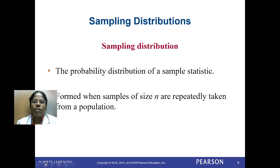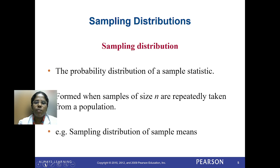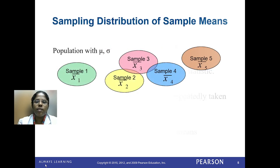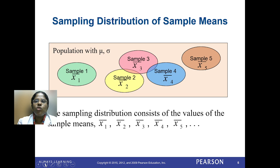So what is the sampling distribution? It is the probability distribution of a sample statistic. We are considering the sample statistics and doing the probability distribution for that. It is formed when samples of size n are repeatedly taken from a population. Here the example is the sampling distribution of a sample mean, where we can consider sample mean or sample variance.